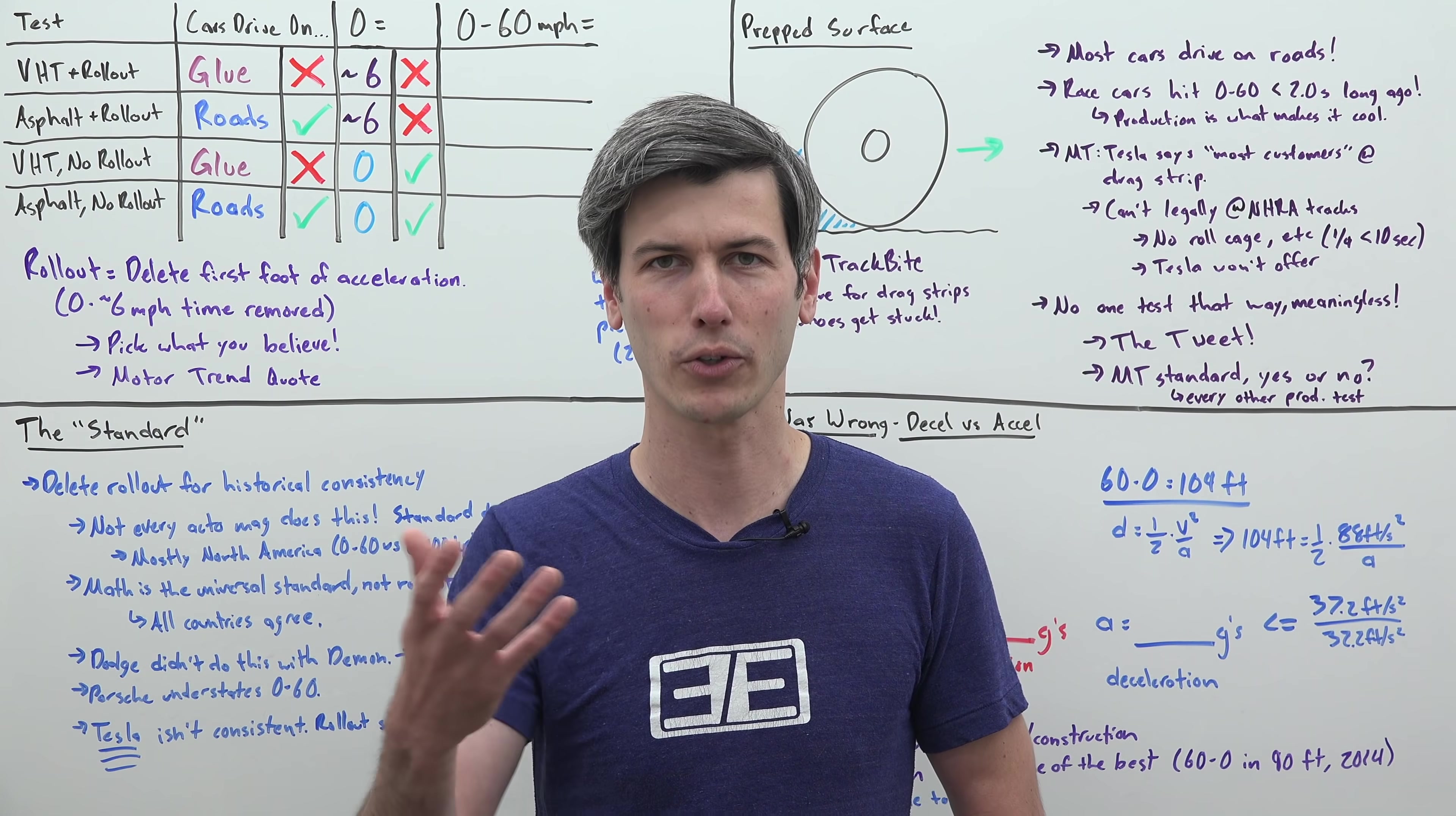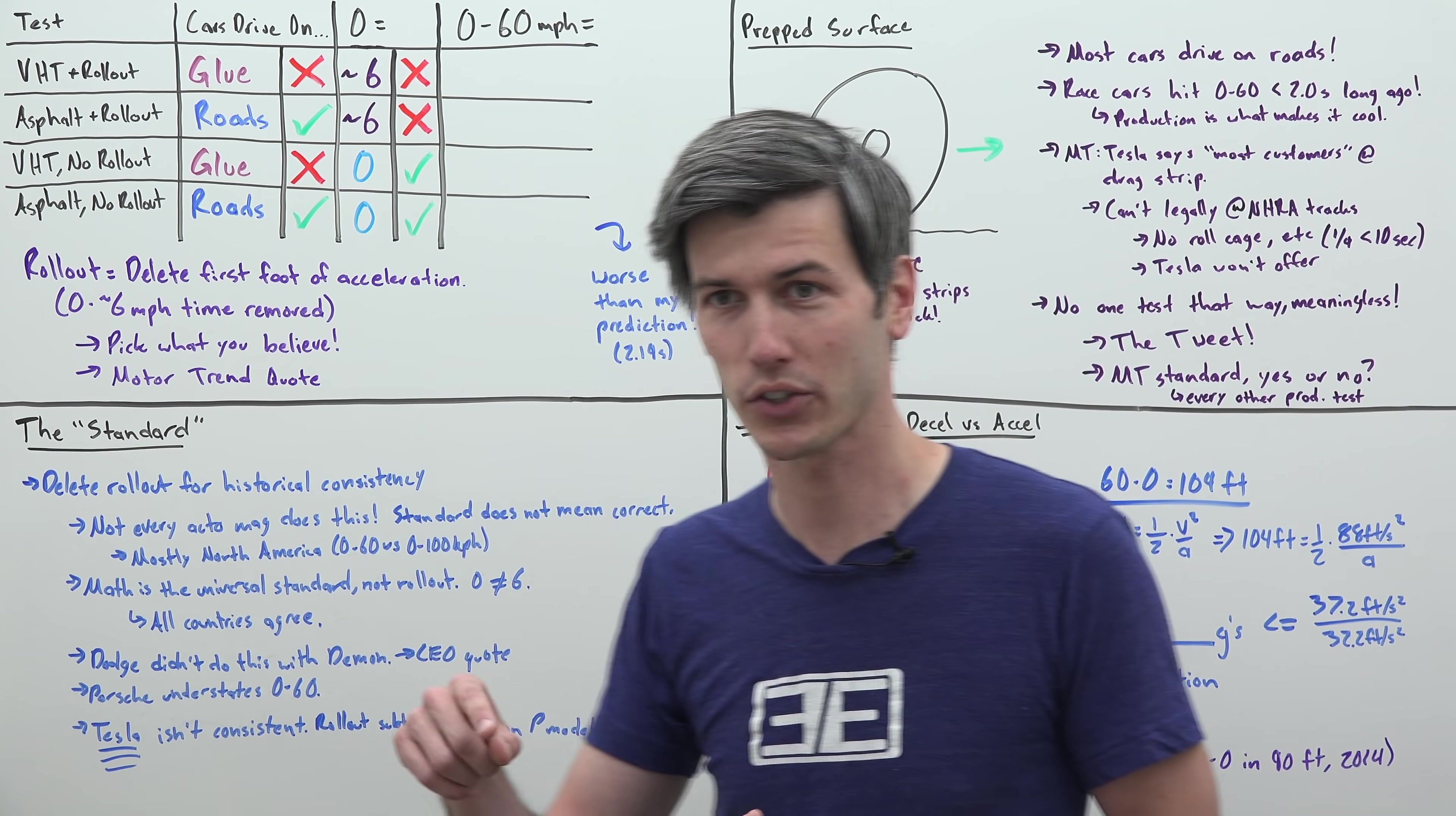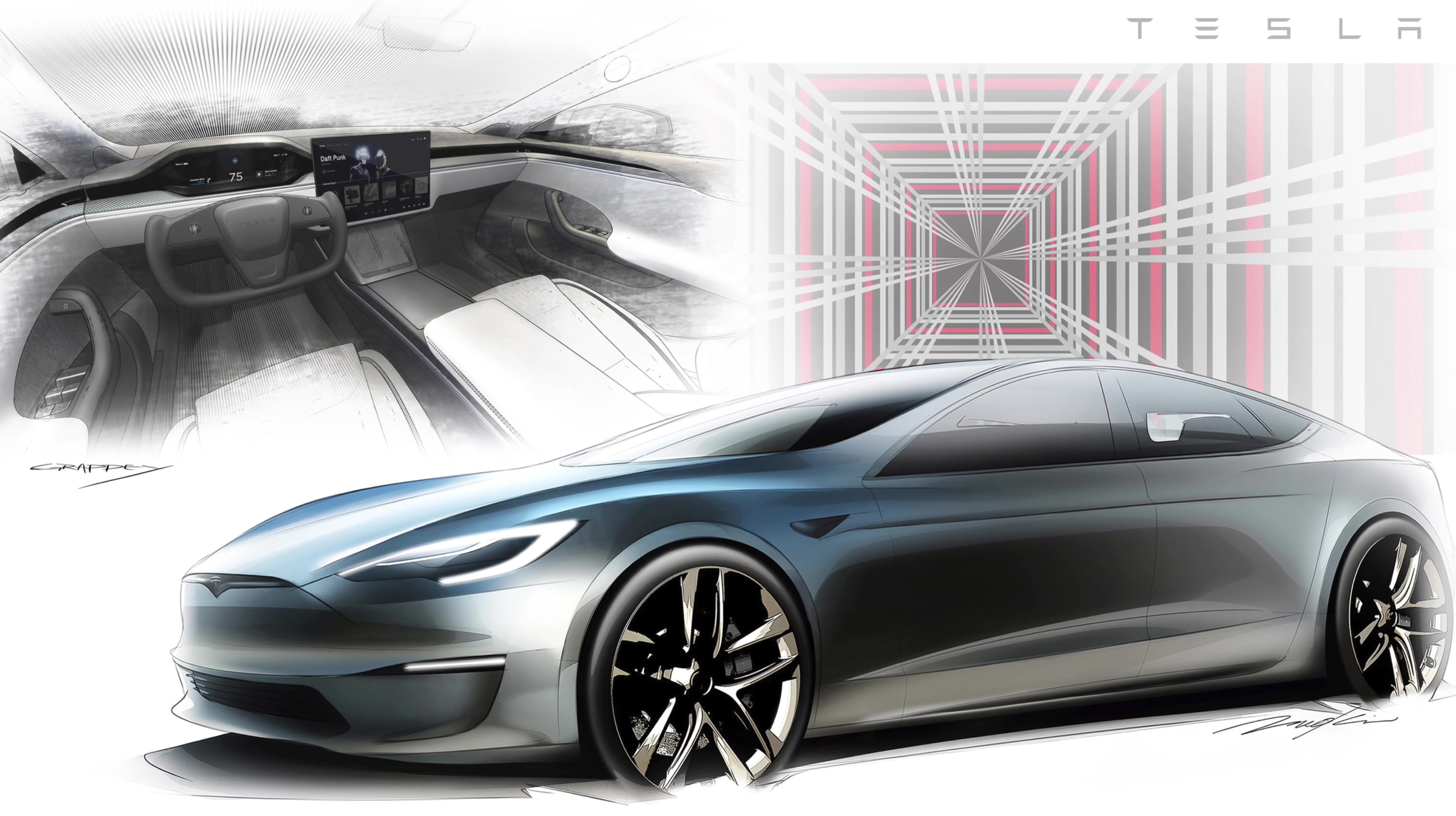So Motor Trend's data shows that what I predicted previously was correct, and actually my predictions were better than what Tesla did. Tesla did worse than I thought they would in this 0-60 with the Model S Plaid.